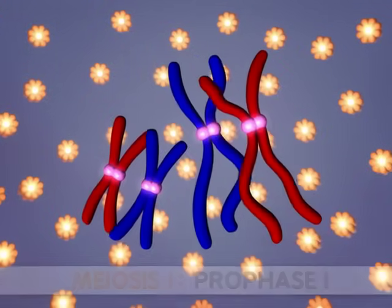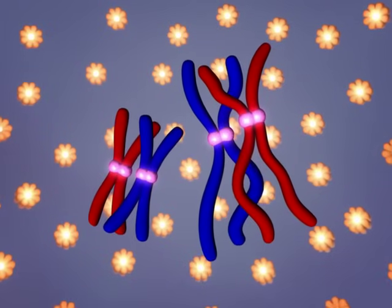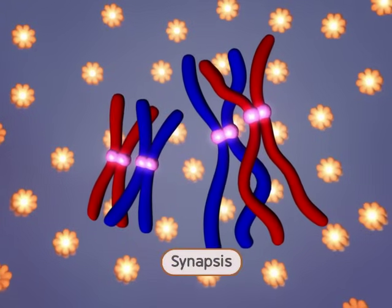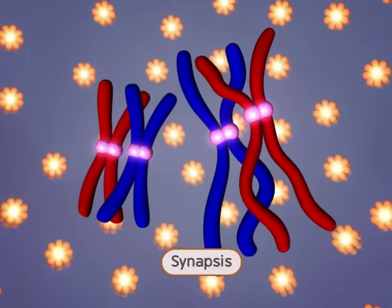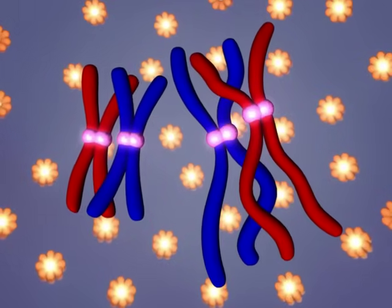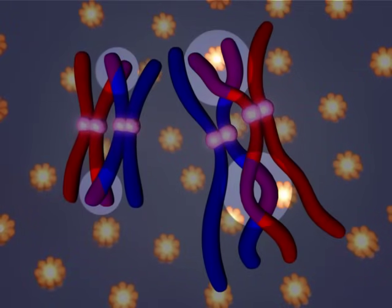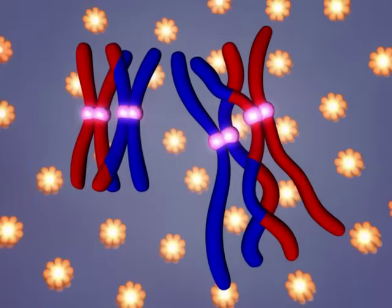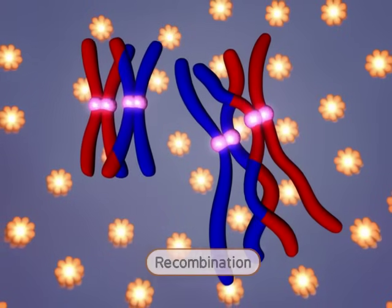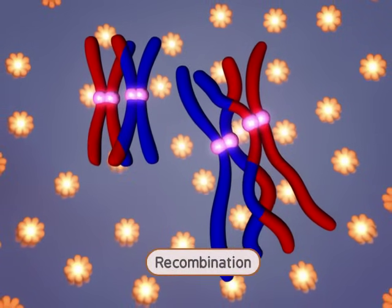Next, each pair of homologous chromosomes undergoes synapsis to form a complex involving two pairs of sister chromatids. Chromosomal material is exchanged between the two pairs of sister chromatids. This event is called recombination, or more commonly, crossing over.